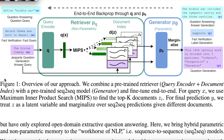I wanted to go through the architectural approach taken in this research paper, as I felt it was very important to why I chose this white paper. First, the model is prompted with the query, and those queries are sent to a query encoder represented by Q. The query encoder turns the query into embeddings. Next, Q(x) performs a maximum inner product search to find the top-K documents, which is a function of the retriever. The retriever goes against the document index, represented by D(z), to find the top-K documents.